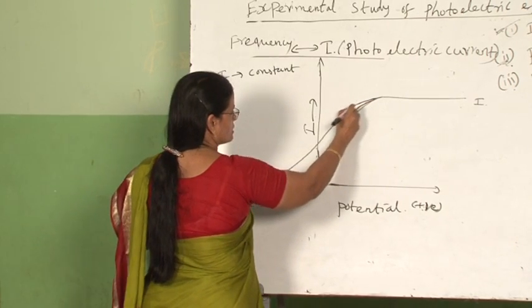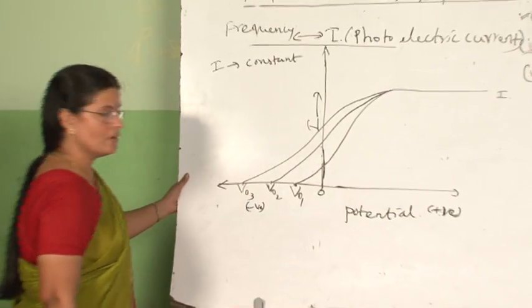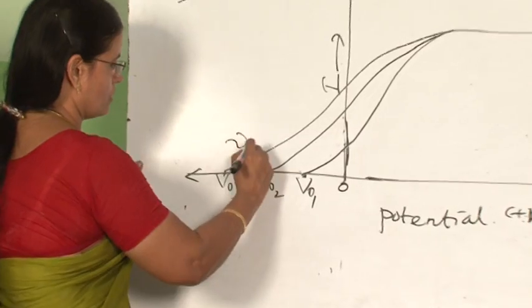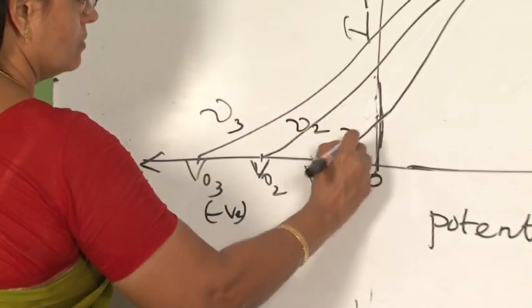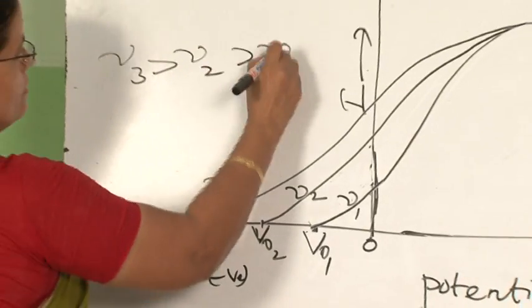Again, if I am repeating the experiment with a third frequency, I will be getting another stopping potential V0_3. This is for nu_3, nu_2, and nu_1, where nu_3 greater than nu_2 greater than nu_1.